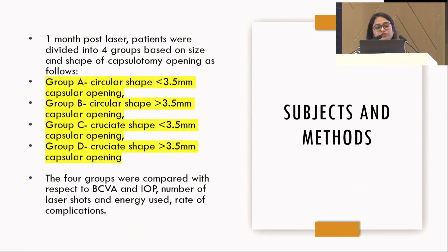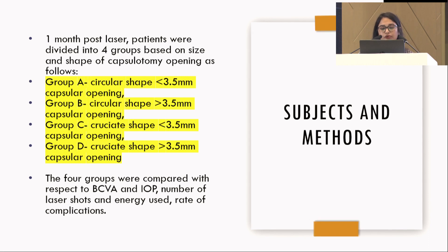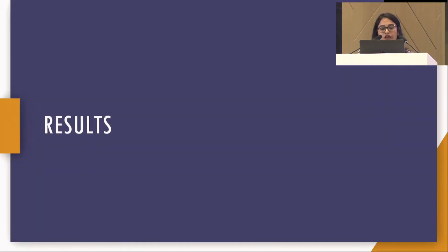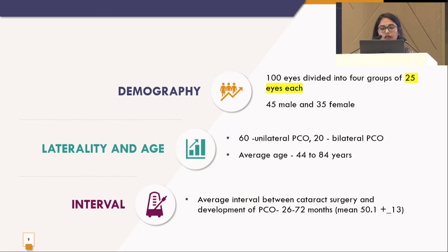After one month post-laser, we divided them into four groups: Group A — circular shape less than 3.5 mm; Group B — circular shape more than 3.5 mm; Group C — cruciate less than 3.5 mm; and Group D — cruciate more than 3.5 mm opening.